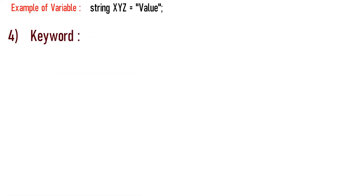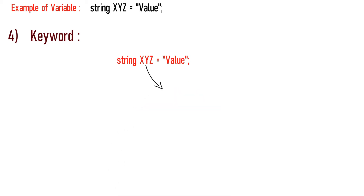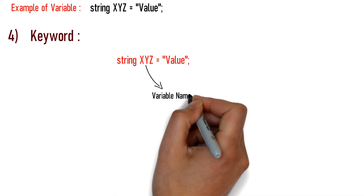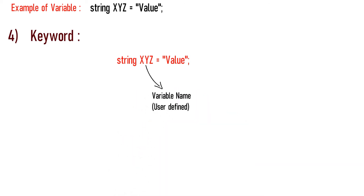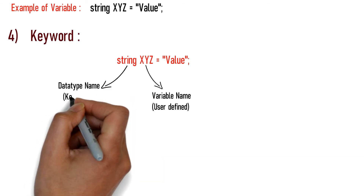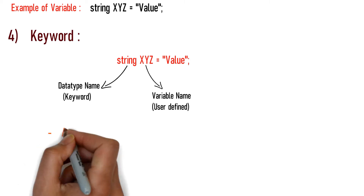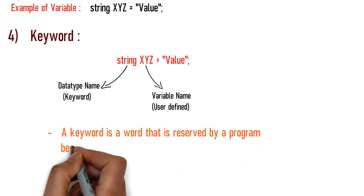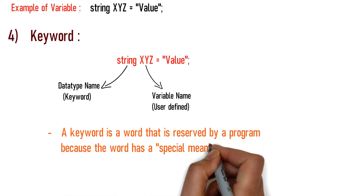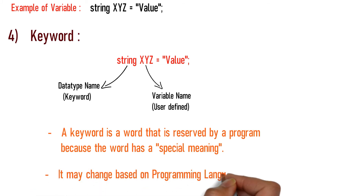Next are Keywords. When we declare a variable, we use a variable name along with a data type like Integer or String. These data type names — Integer, String — are called keywords. Keywords are reserved words in a programming language. Every programming language has its own set of keywords.